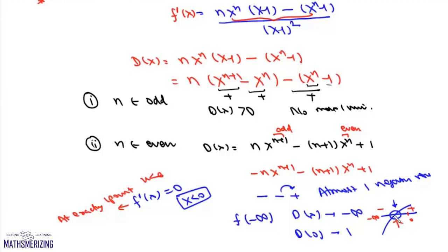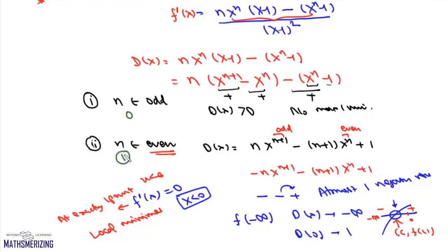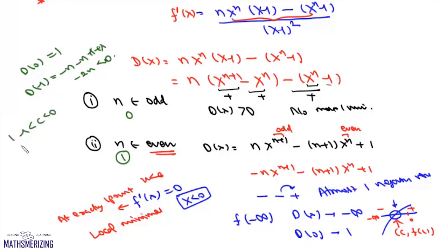So f'(x) equals zero at exactly one point c in (−∞, 0), and the sign changes from negative to positive — this is a local minimum. If n is odd, number of local minima is 0; if n is even, it is 1. Since d(−1) = −2n < 0 and d(0) = 1 > 0, the point c lies between −1 and 0, so k equals −1.